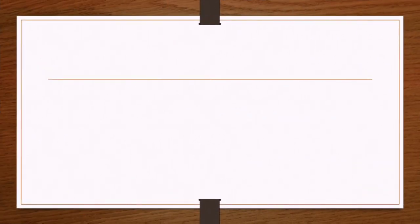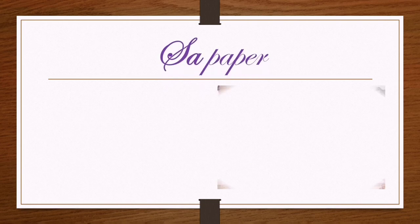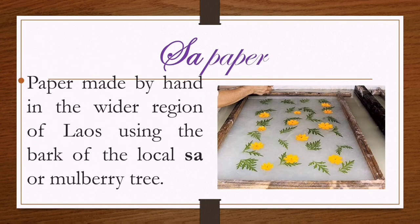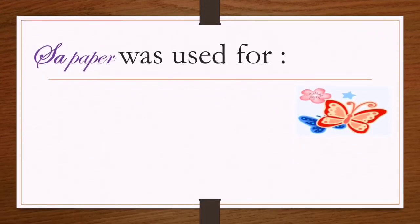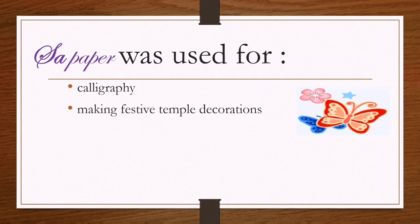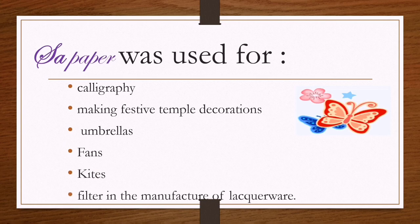Next is the country Laos. Their arts and crafts are known as sa paper. Sa paper is made by hand in the wider region of Laos using the bark of the local sa or mulberry tree. Sa paper was used for calligraphy, festive decorations, temple decorations, umbrellas, fans, kites, and even as a filter in the manufacture of lacquerware.